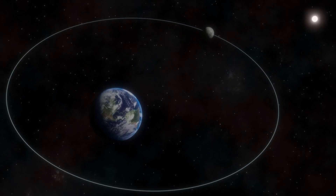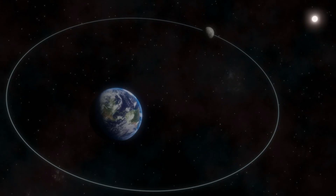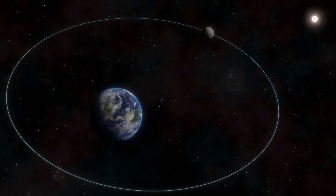That's true of the Sun and the Earth, and also true of the Earth and the Moon. As the Moon orbits around the Earth, it does so in an ellipse, and it moves faster when it's closer to the Earth and slower when it's farther from the Earth. And that's actually a simple statement of Kepler's second law: an orbiting object varies in speed. Sometimes it moves faster, sometimes it moves slower.